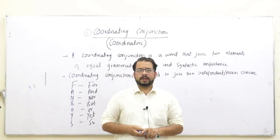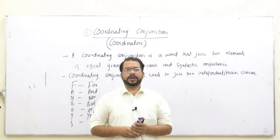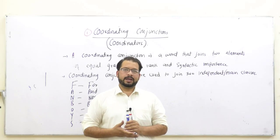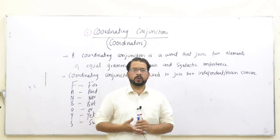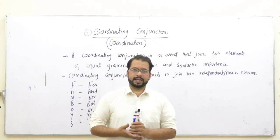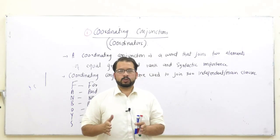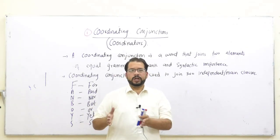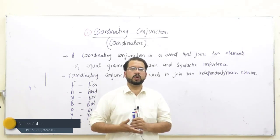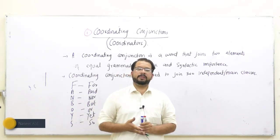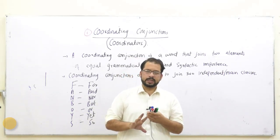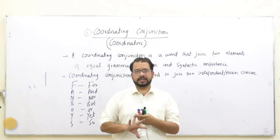Assalamu alaikum dear viewers. In the previous video we discussed what conjunctions are, and we said that conjunctions are basically joining words. Conjunctions ka humara paas dusra jo naam hai, isko hum connectors bhi kehte hain. We call them connectors because with the help of these words we join two words, two phrases, two idioms, two clauses, or two sentences. We also said that basically we have got three types of conjunctions: coordinating conjunctions, subordinating conjunctions, and paired conjunctions.